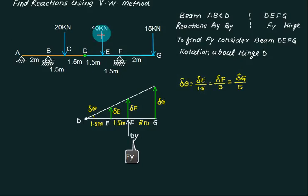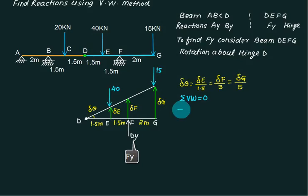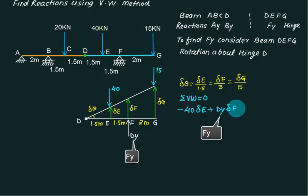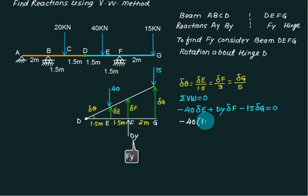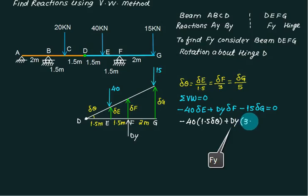At point E we have a force of 40, and at point G we have a force of 15. Now apply the principle of virtual work. If the direction of force and displacement are opposite, the sign is negative; if the same, it is positive. Substituting: minus 40 times 1.5 Del Theta, plus DY times 3 Del Theta, minus 15 times 5 Del Theta, equals zero.